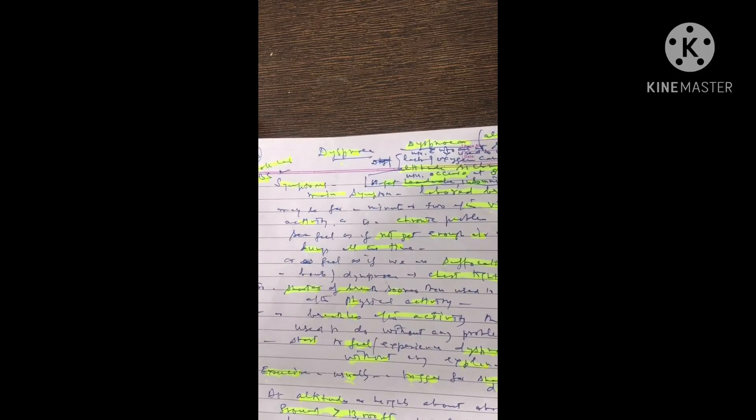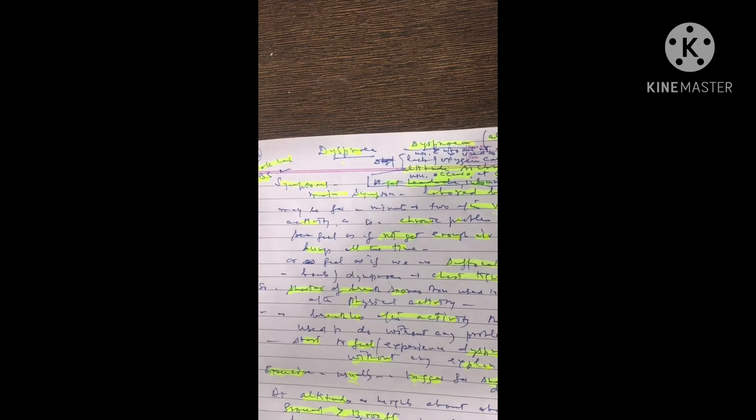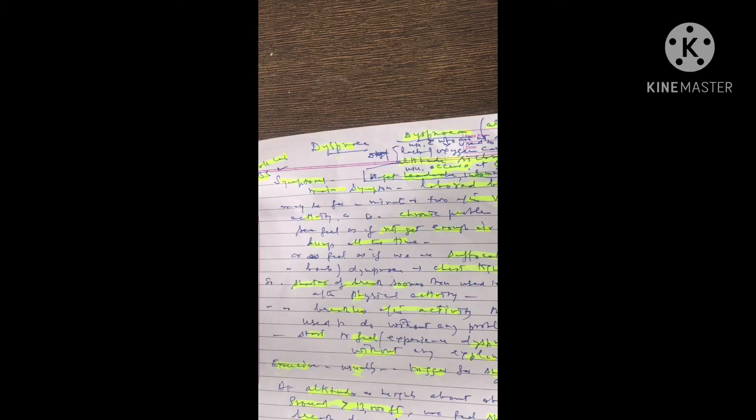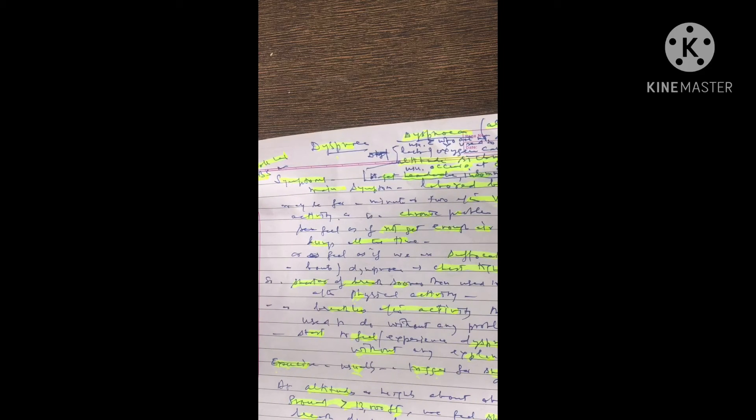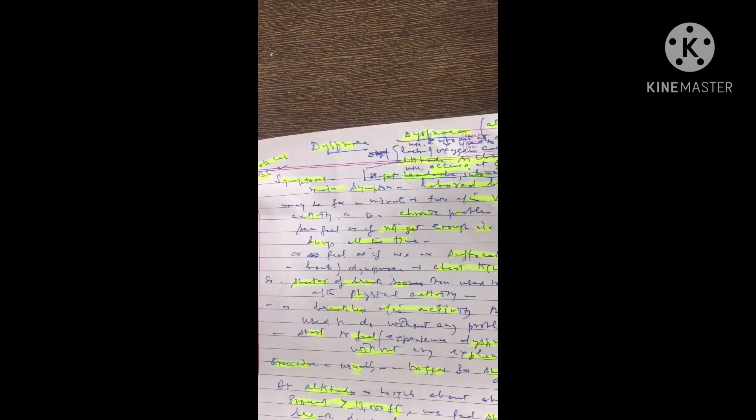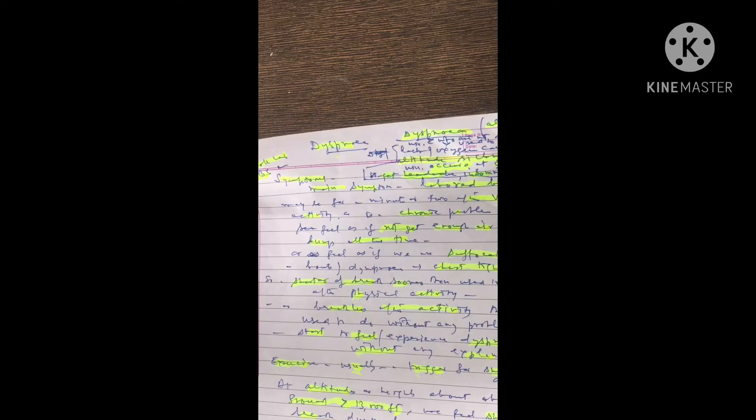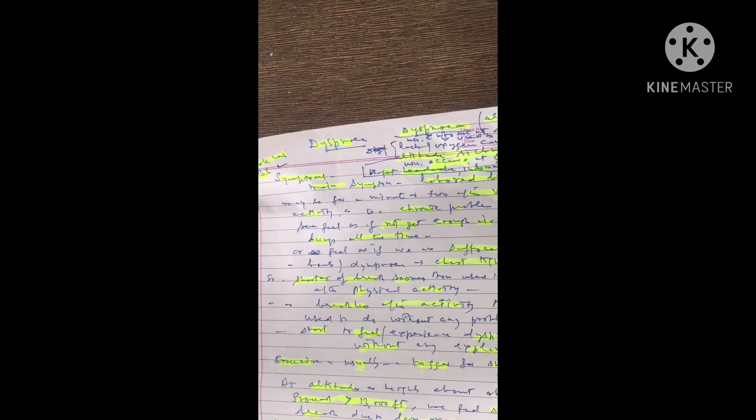Dyspnea at altitude, that is called altitude sickness, usually affects a person who is not used to it due to lack of oxygen at high altitude. It usually occurs at and above 8,000 feet or above. Symptoms include headache and insomnia in altitude sickness, and the main symptom is dyspnea.